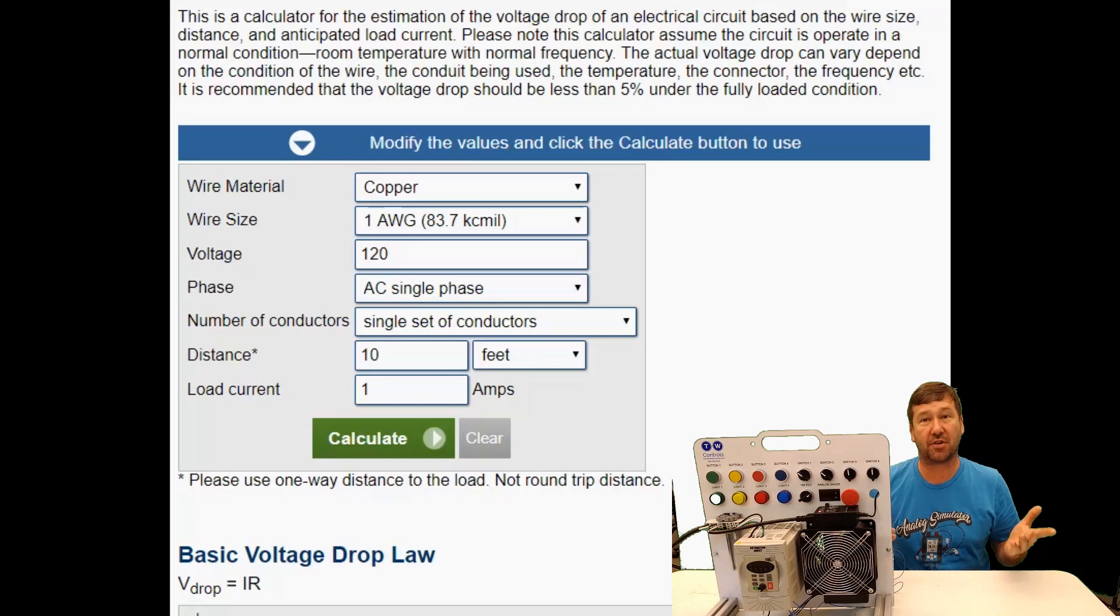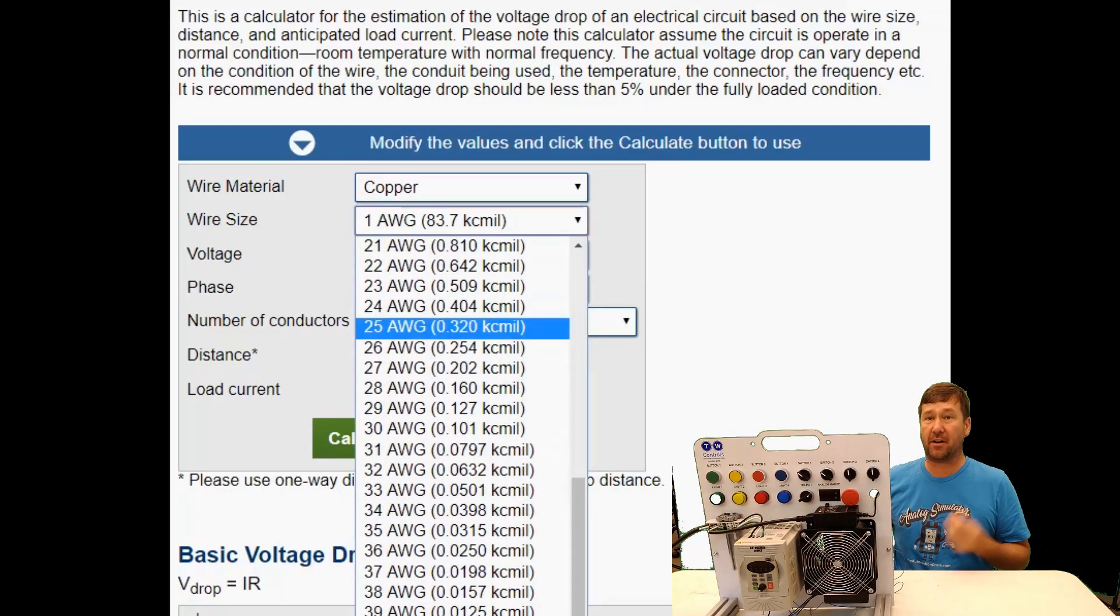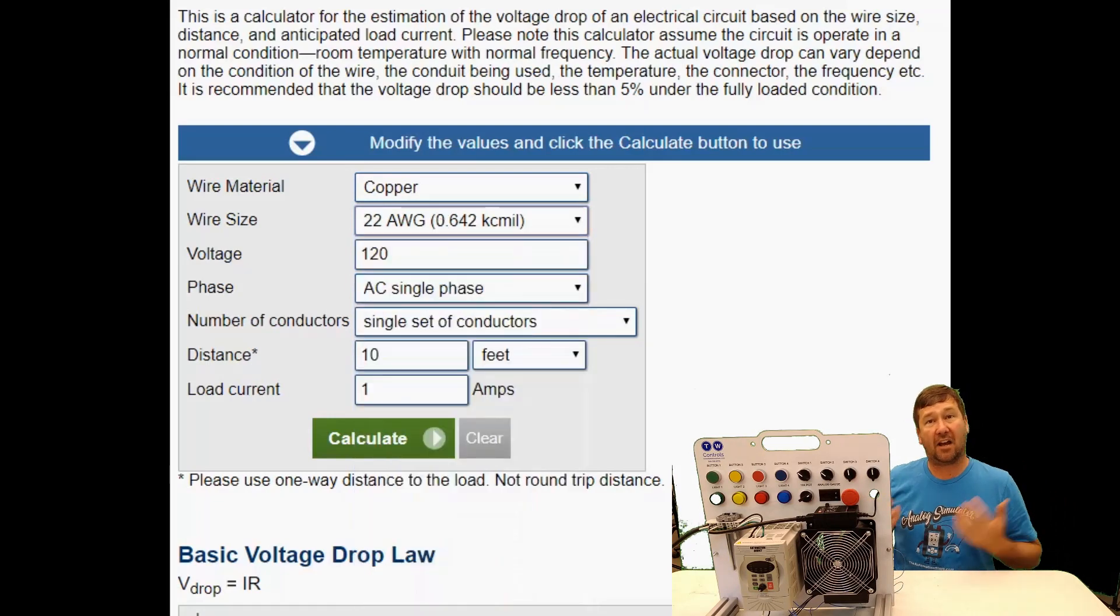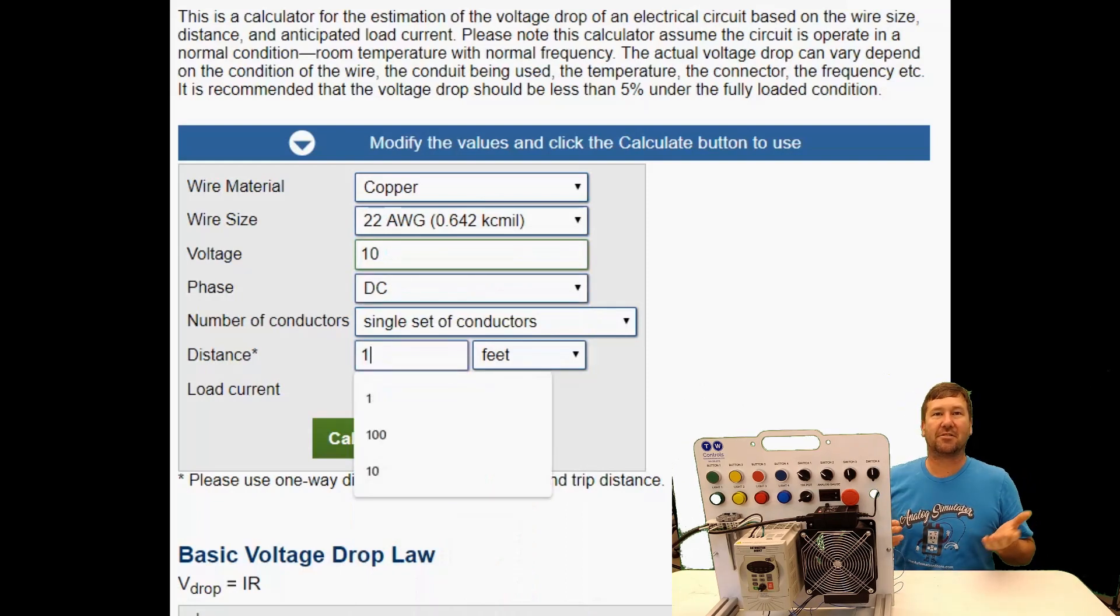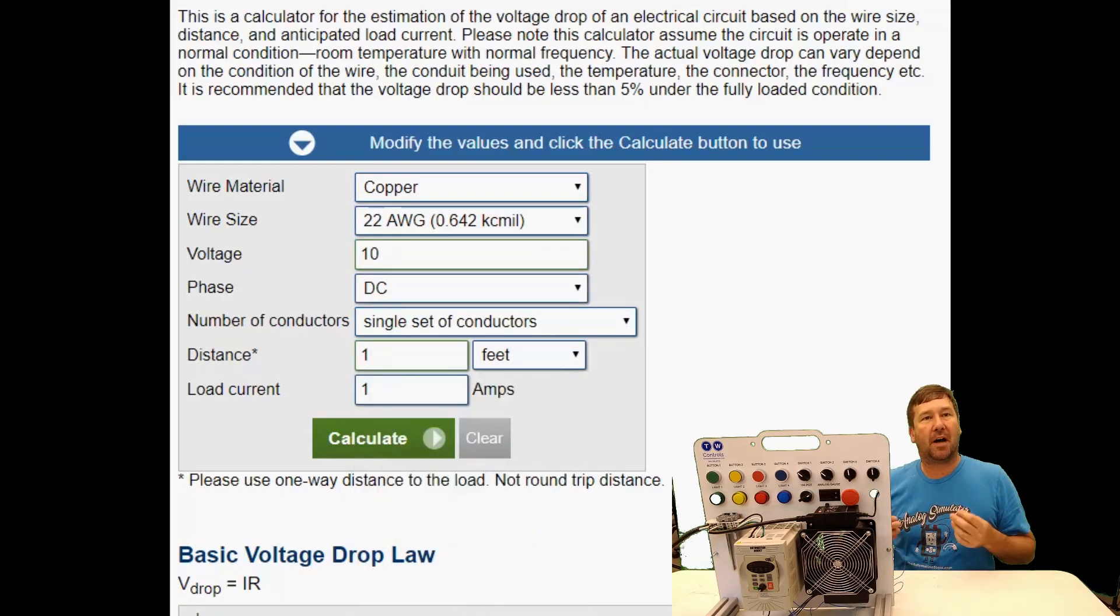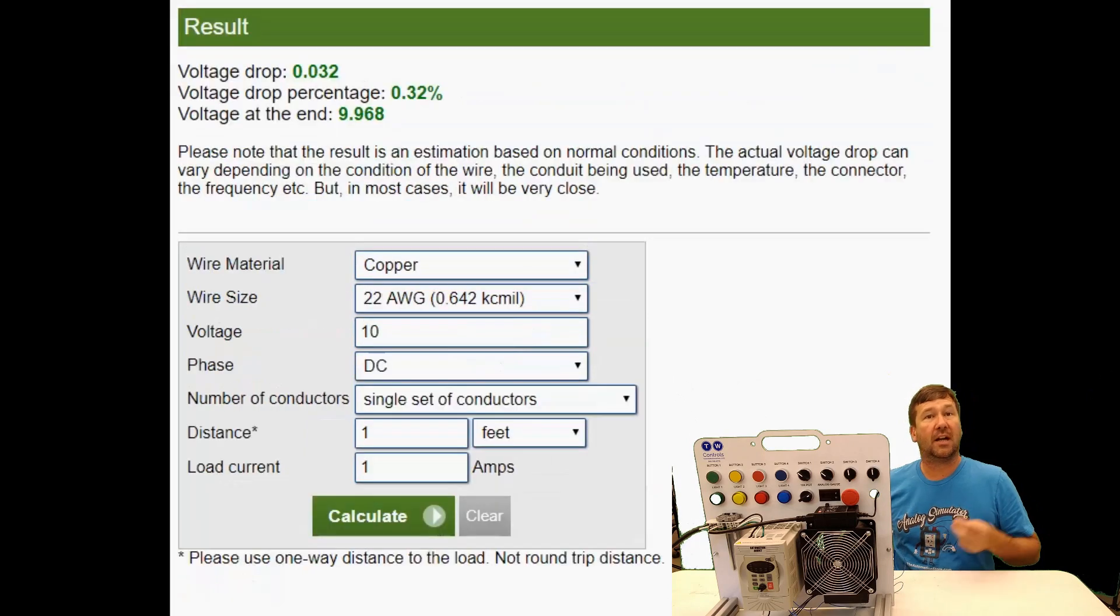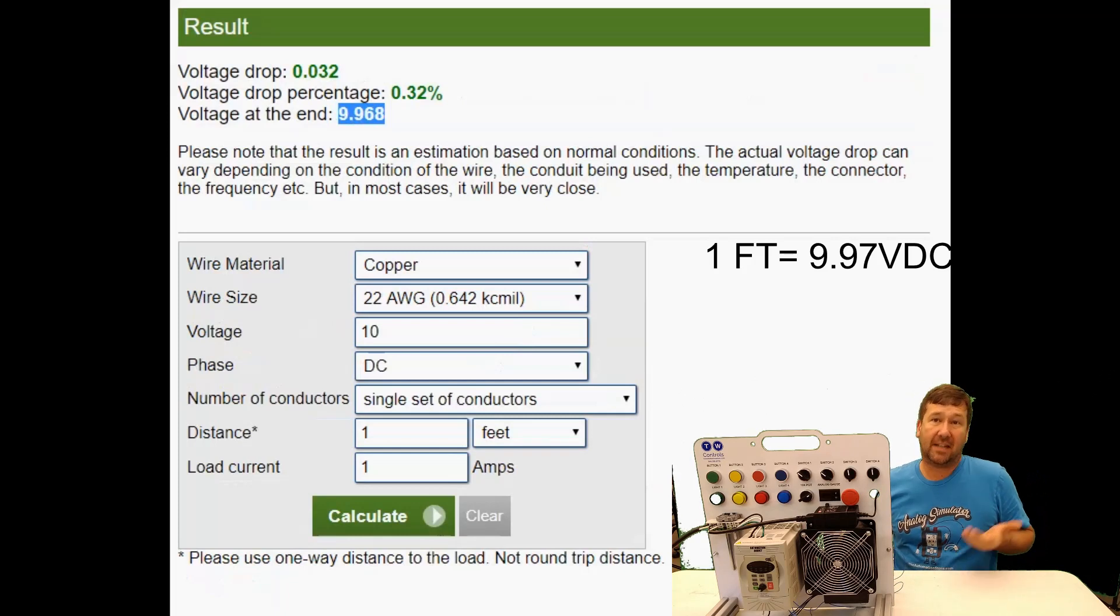So let's jump right into a voltage drop calculator. Here we're going to select 22 gauge wire, which is a very common signal size, and our voltage is going to be 10 volt DC. Let's say we have one amp of load. Now the signal load is not going to pull one amp, but I want to make the error much more obvious to you. If our cable is one foot long, then the voltage on the other end of our cable is going to be 9.968 volts, and chances are that's okay for our application.